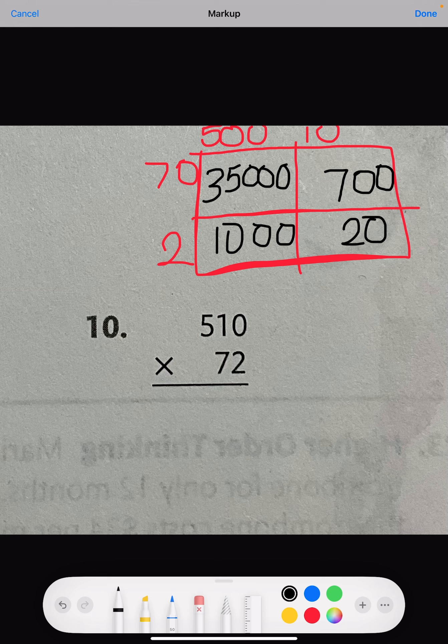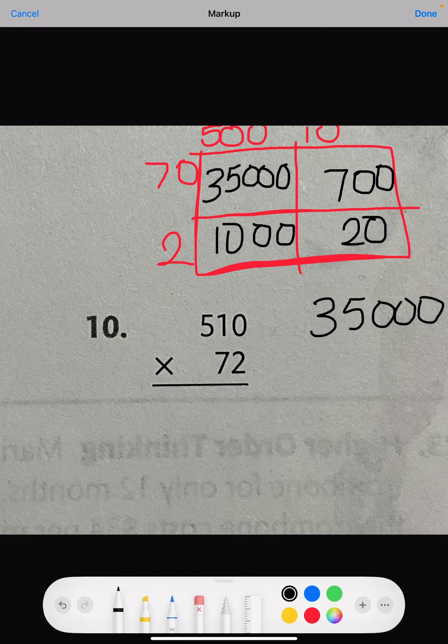Now, we're going to add the partial products. Here is our first partial product, which is 35,000. Next, we're going to add the 1,000, then 720.